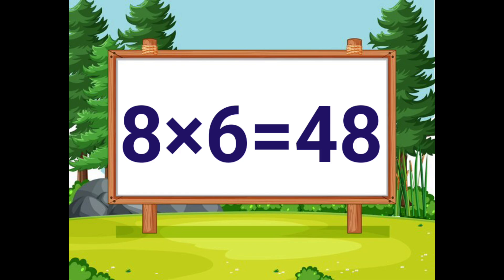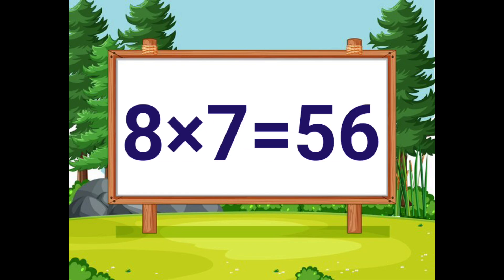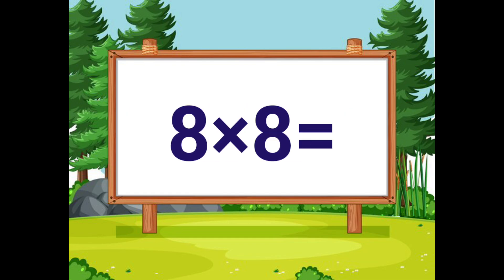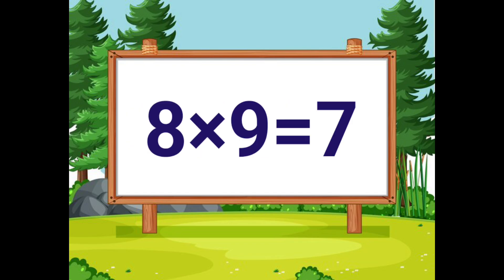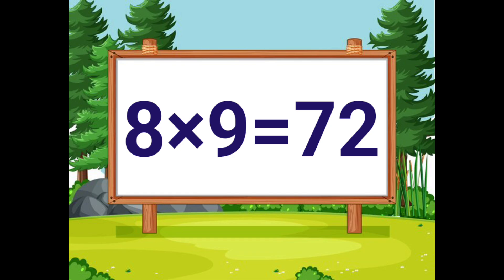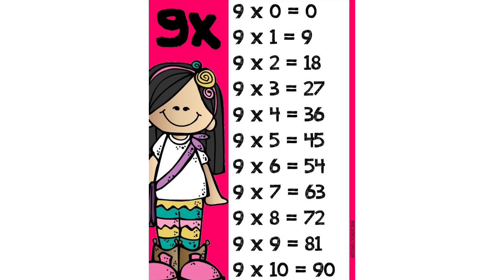8 sixes are 48. 8 sevens are 56. 8 eights are 64. 8 nines are 72. 8 tens are 80. Now we are going to see the 9th table.